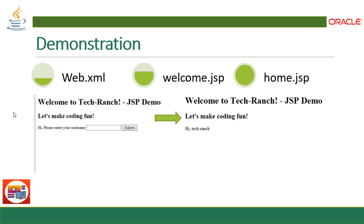The flow starts from web.xml where we define the welcome file list with a page name — where to start. It goes to welcome.jsp. In welcome.jsp we are going to enter the username, and once submit is done, home.jsp will display the name with the message. This is the Hello World demonstration.